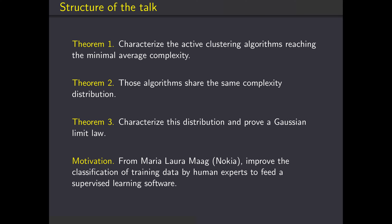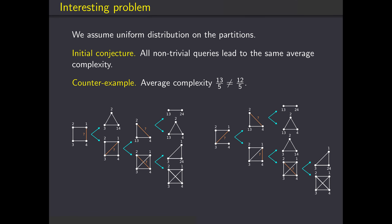The motivation was to improve the classification of training data by human experts to feed a supervised learning software. They were doing classification item by item — looking at an item and deciding which of seventy classes it belongs to — but they preferred to input two items and decide whether they belong to the same class or not. It was more efficient for them to work that way. So we wanted to analyze this setting and see how many queries they were going to be asked. First, I want to show you that this problem is not as trivial as it might first seem. A first conjecture was that if you avoid trivial queries, then any query will do and the average complexity is going to be the same.